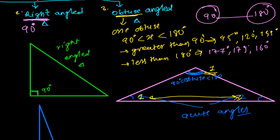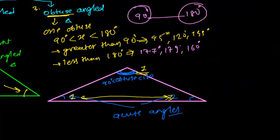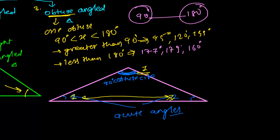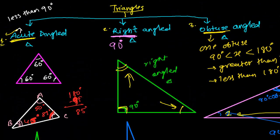Similarly, in a right angle triangle, if there is one right angle then the other two are both acute angles. So to summarize: in an acute angle triangle all angles are acute — every angle is less than 90 degrees. In a right angle triangle, one angle is 90 degrees and the other two are acute. In an obtuse angle triangle, one angle is obtuse and the other two are acute.